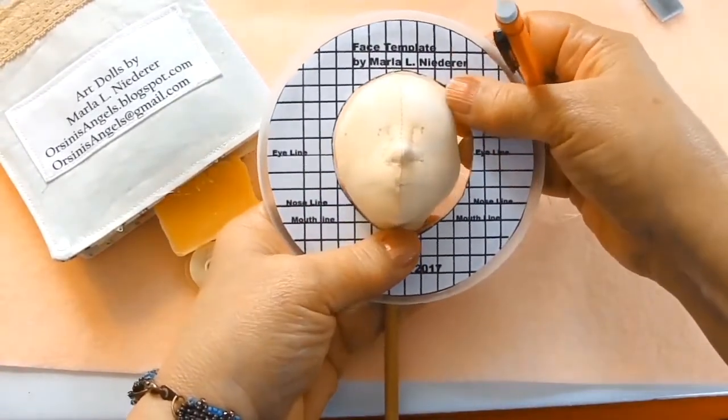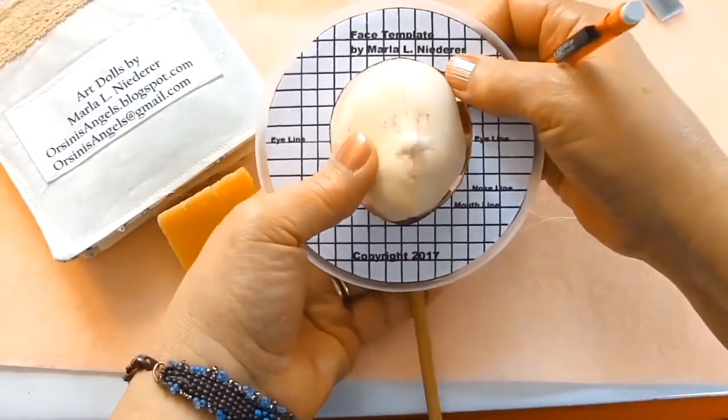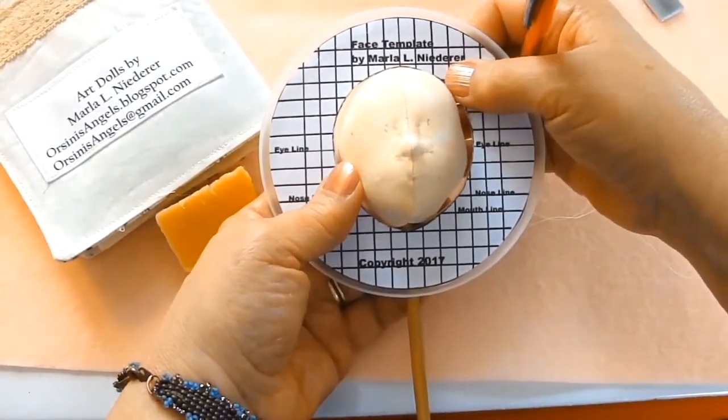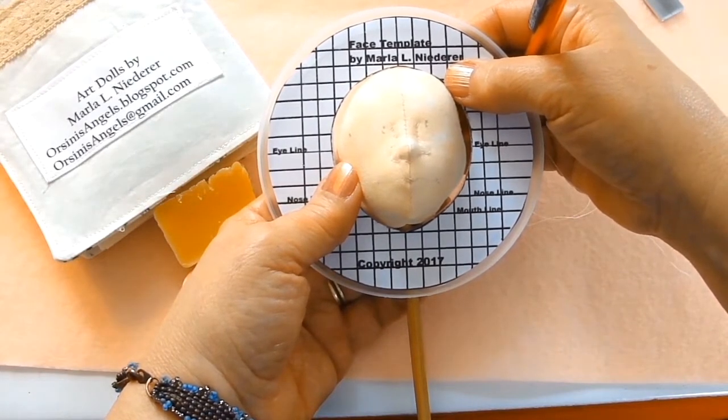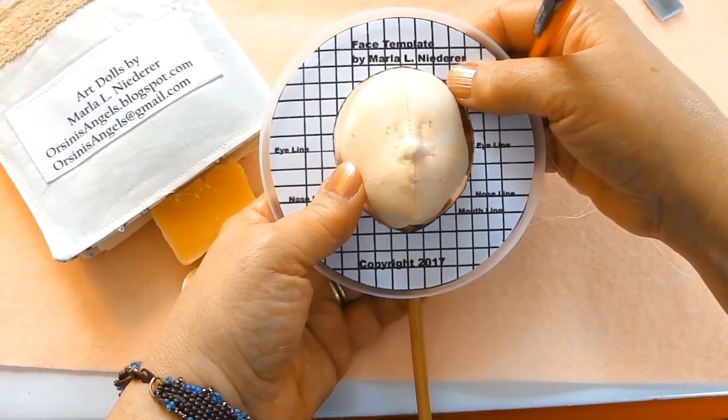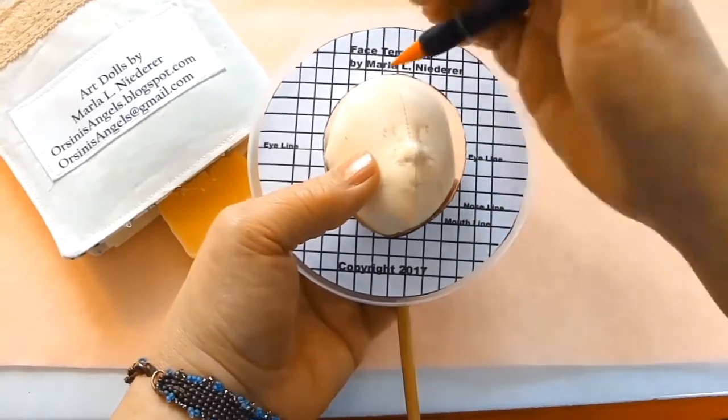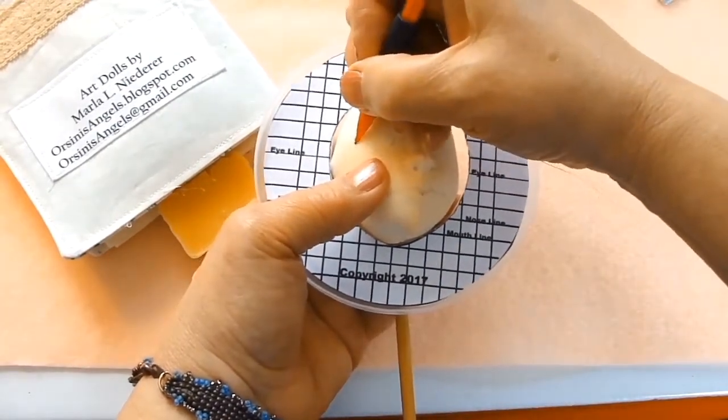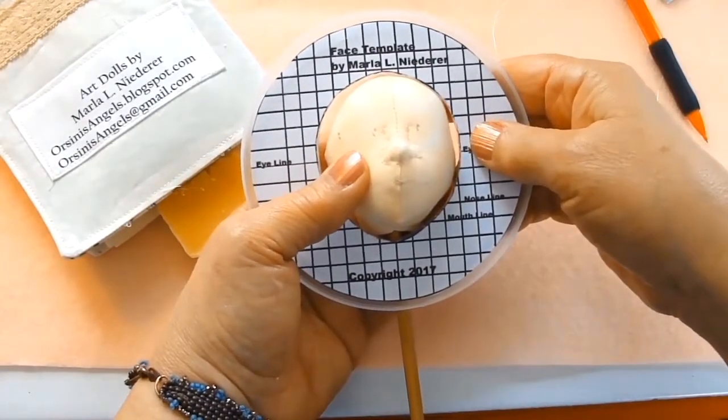Now when I'm done, I just place it back into the template and make sure everything's where I want it. If I feel like I need to adjust some of the markings, I'll do that before I start the needle sculpting. I'll put new marks in where I think they really should be after looking at it in the template one last time, and then erase the marks that I don't want.